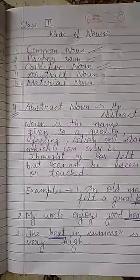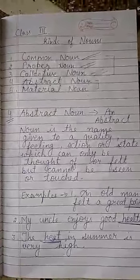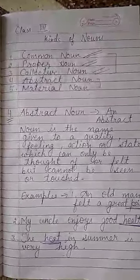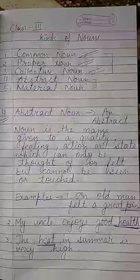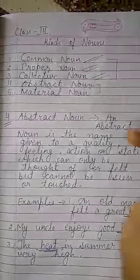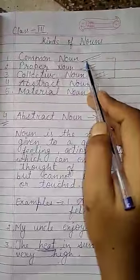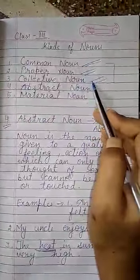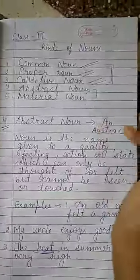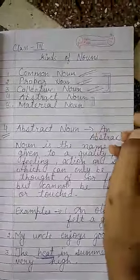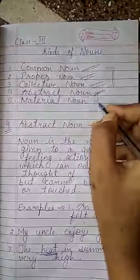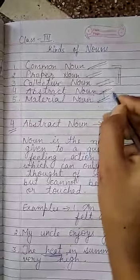Hello students. In our previous videos we have learned about nouns — different kinds of nouns. We have learned common noun, proper noun, and collective noun. We have completed these three kinds of nouns. Today we are going to learn about abstract noun and material noun only, as these two were left.